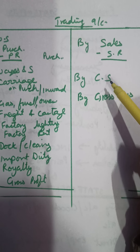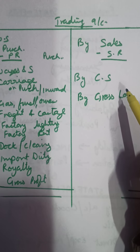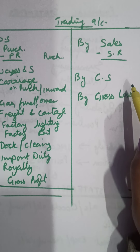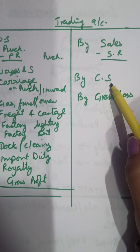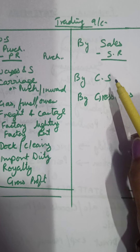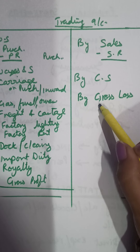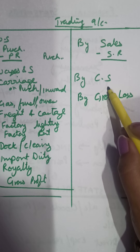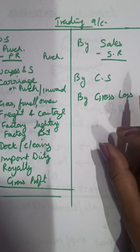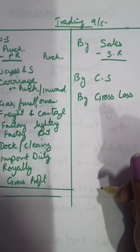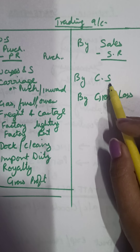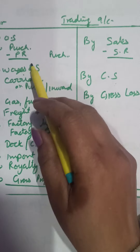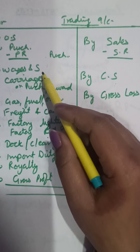Closing stock is the stock that is left unsold. It is usually given outside the trial balance — I had shown you in the textbook also. Closing stock is an item recorded after the trial balance has been maintained. We write closing stock on the credit side. The only things on the credit side are closing stock and net sales; opening stock, purchases, and all direct expenses go on the debit side.